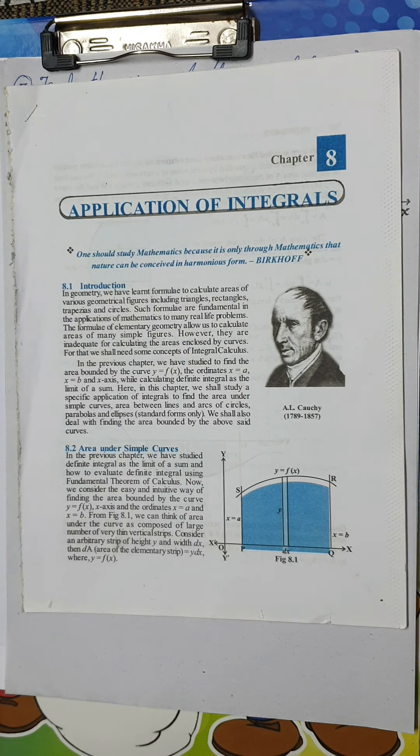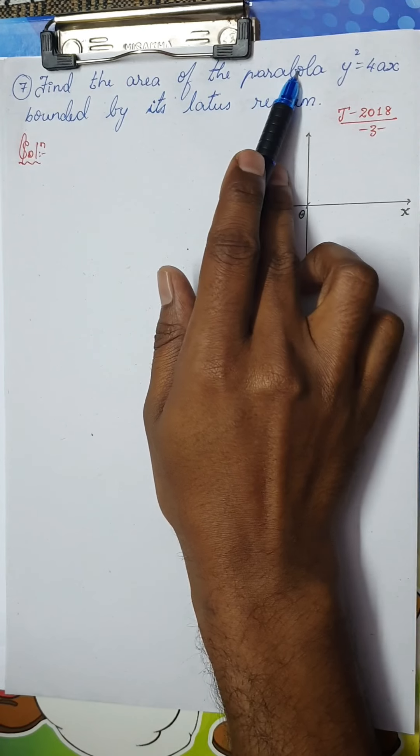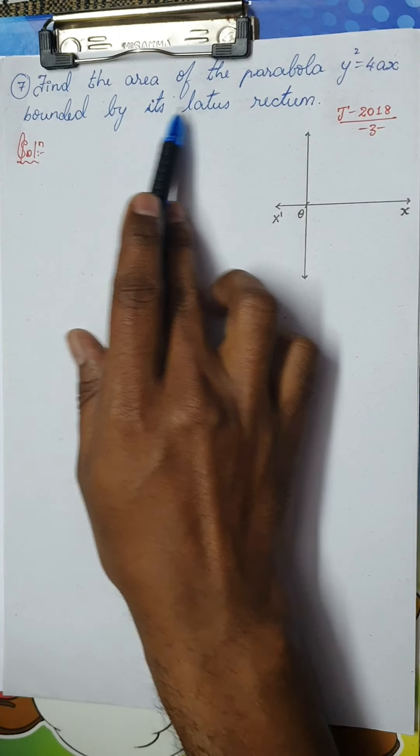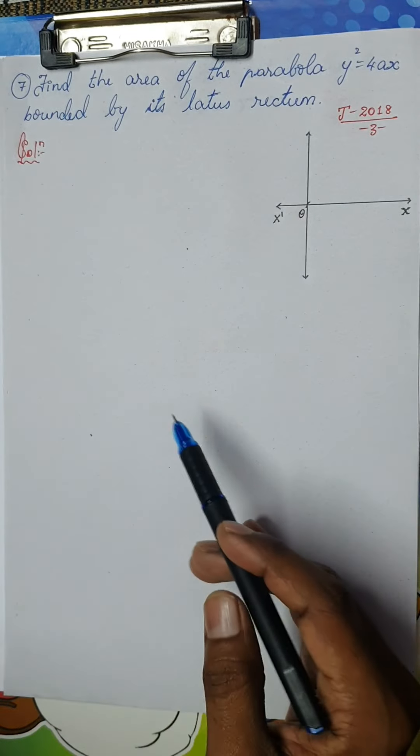There are a few more questions we are going to see today, which have been asked in the previous year examinations for second PUC. I am not going to take much of your time. We shall directly go on to the first question for the day. The first question is: find the area of the parabola y² = 4ax bounded by its latus rectum.